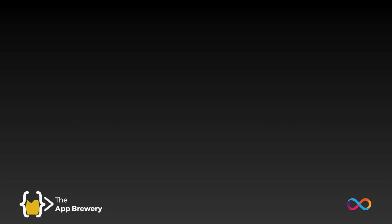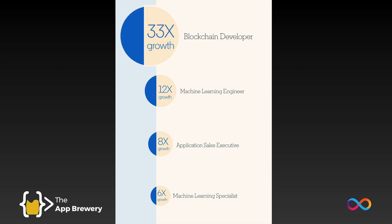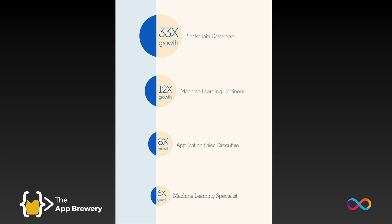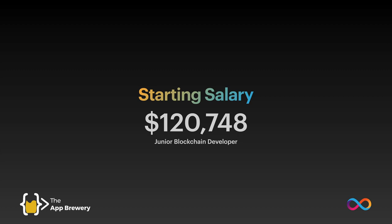This comes from a LinkedIn survey that showed a 12x growth in the number of job opportunities for machine learning engineers, but the number of job opportunities for blockchain developers grew 33 times, which is absolutely massive. The starting salary of a junior blockchain developer is somewhere around $120,000 in the US — making it very hard to beat if you're deciding between web developer, mobile app developer, or data scientist.